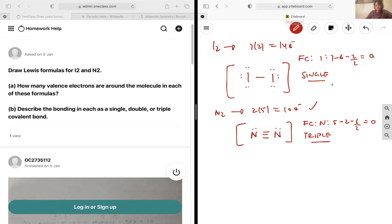And this one has three bonds between it, so the answer is going to be triple. So it's a triple covalent bond and a single covalent bond for the first one and triple for the second one.